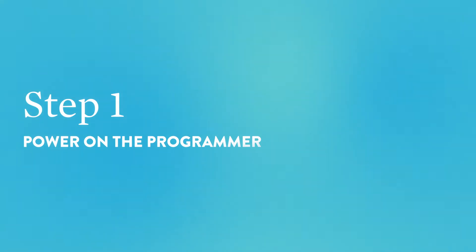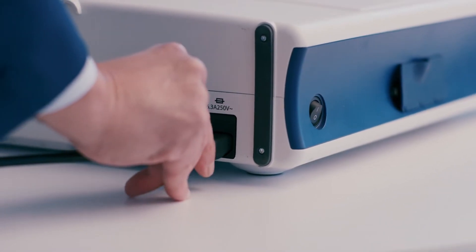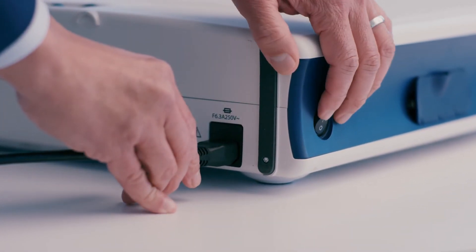Step 1: Power on the programmer. Plug in the power cord and press the on-off toggle on the left side of the programmer.